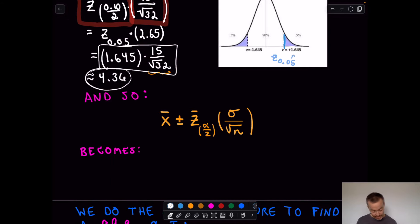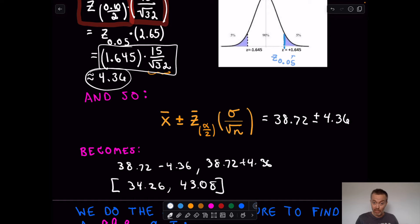So if I fill in my formula, it says I'm going to have, this is going to be equal to x̄, which we said was equal to 38.72, plus or minus my 4.36. And if you do 38.72 minus 4.36, lo and behold, that's where you get that lower number I gave the mayor of 34.26. And if you take 38.72 plus 4.36, you're going to get that upper value. And that upper value I said was 43.08. So that's where those numbers came from that I gave the mayor. I just used that formula that I just showed you.